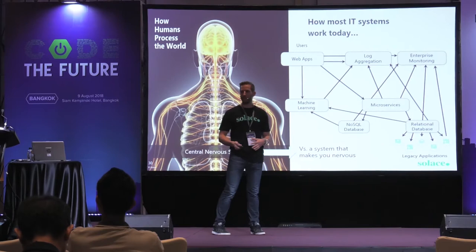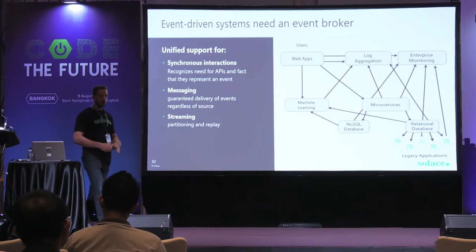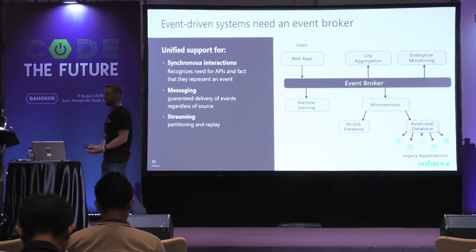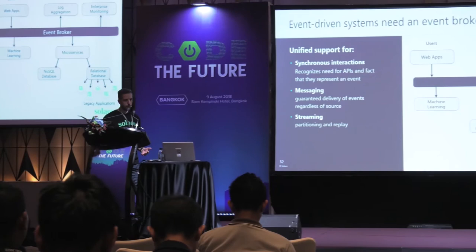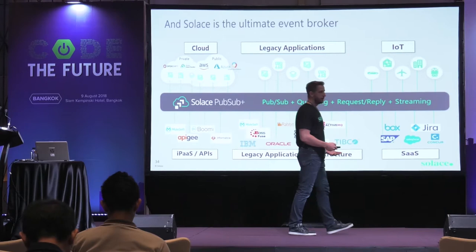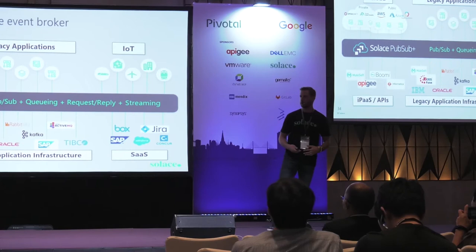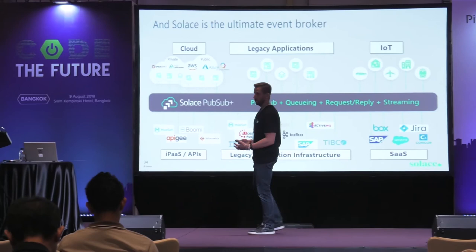One idea to address that mess is to use an event broker: put something in the middle, and things just talk to that one thing. You have a single connection into a distribution fabric that routes events to the consumers most interested in them. That's what Solace does — a platform to help move data and events between applications using various APIs, various languages, whether on-prem or in the cloud, across different protocols: pub/sub one-to-many, queuing, persistent, non-persistent, request-reply, and streaming.